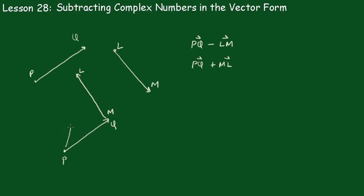And therefore the vector we're after would have to be P to L. PQ plus ML equals PL.